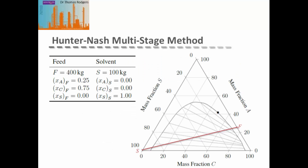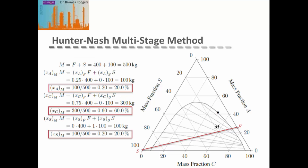We're given the flow rate of the feed and the feed composition, and the flow rate of the solvent and the solvent composition. So we can plot our feed and solvent points on our ternary phase diagram, and we know that the mixing point must lie on a straight line between these two values. We can calculate the mixing point either by taking a mass balance for each component, or by using the lever arm rule, saying that the ratio between our feed flow rate to our solvent flow rate equals the length of the line between S and M to F and M.